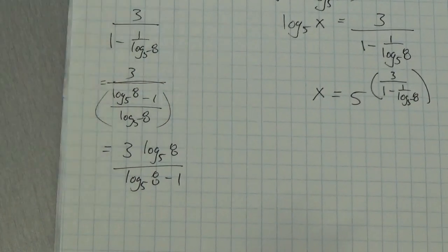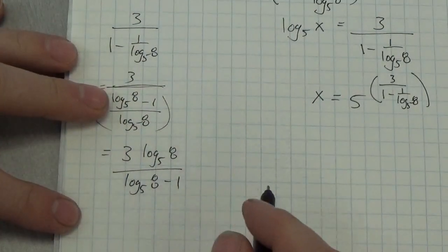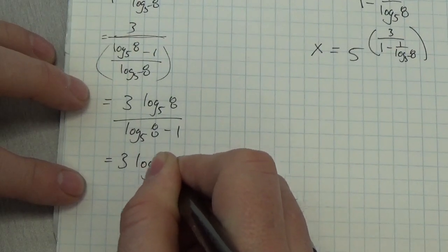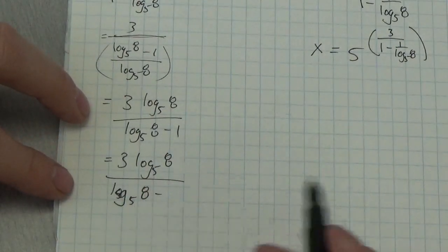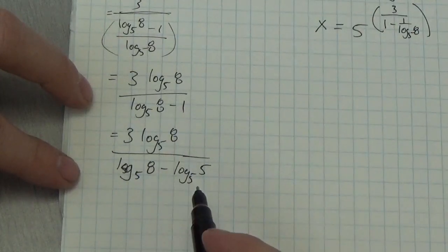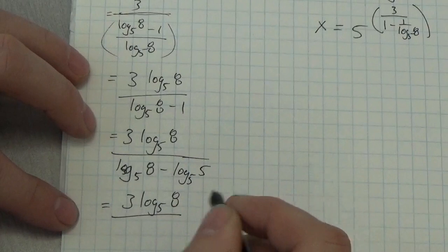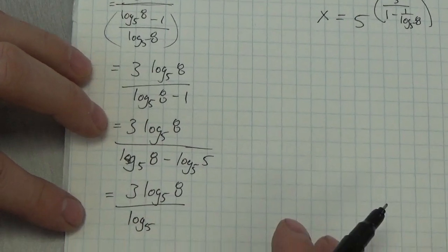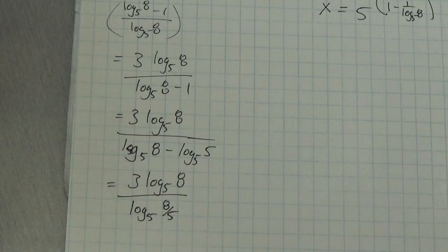That's a little nicer, but I can do a bit better. I've got that minus 1 in the denominator, and I can rewrite that 1 as a logarithm. Since I'm using logs base 5, I can rewrite that 1 as log base 5 of 5. Now the denominator becomes log base 5 of 8 minus log base 5 of 5. That subtraction between two logarithms becomes division within a logarithm, so the denominator becomes log base 5 of 8/5.